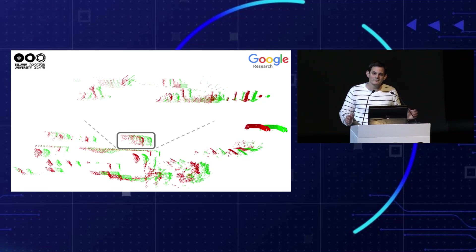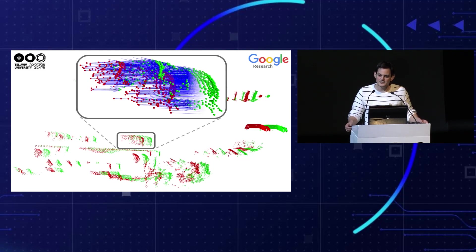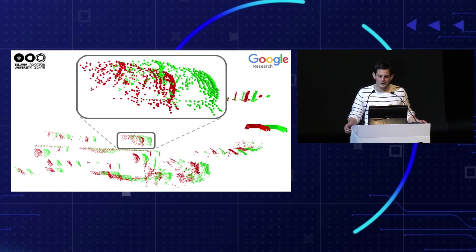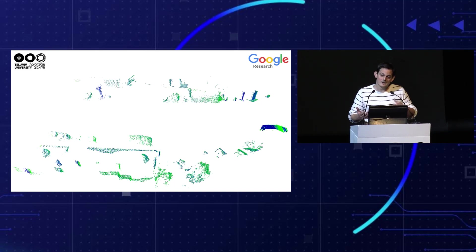Let's continue and talk about scene flow. In this case, we have two observations of a dynamic scene — for example, a self-driving scene — where the source point cloud is in red and the target point cloud is in green. Our goal is to compute the per-point motion vector for the source point cloud in order to align it to the target. Throughout the scene there are challenging cases: different point density of the cars, different geometries (curved and flat), and partiality of the objects. Still, the method can handle all these cases gracefully.